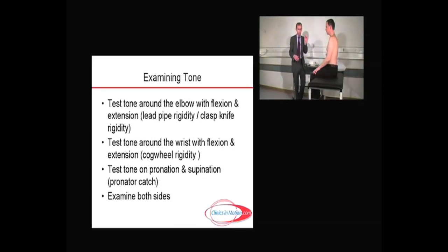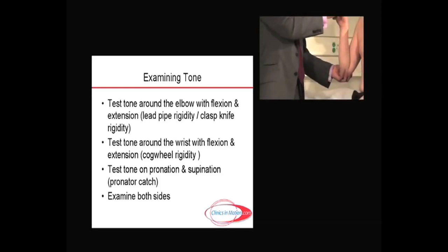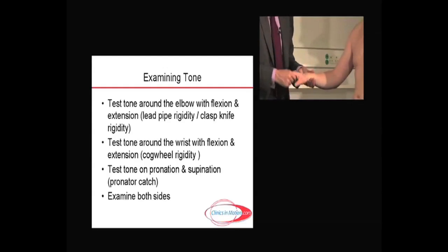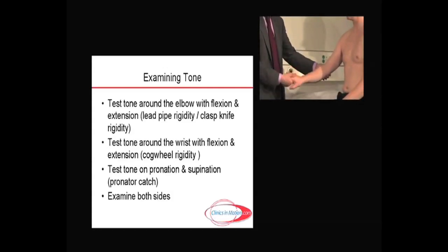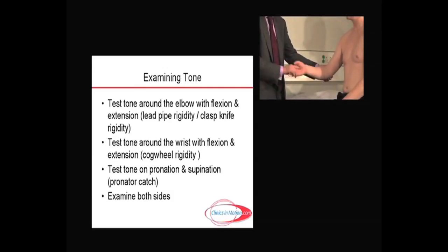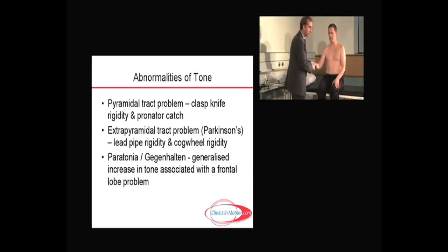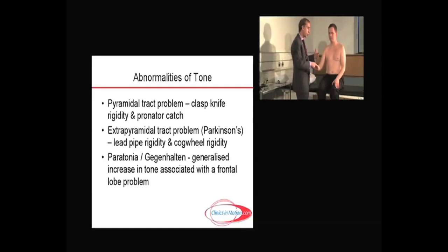People tend to approach tone in a haphazard manner, so I always recommend organisation. I bend the arm up and down at the elbow — flexion and extension — thinking about lead pipe rigidity in Parkinson's. Then I move down and bend at the wrist, thinking of cogwheel rigidity in Parkinsonism or extrapyramidal disorders. Then a more subtle sign: moving from pronation to supination quickly. In upper motor neuron or corticospinal tract damage, you get a catch called a pronator catch. Clasp-knife rigidity is pull-then-release; pronator catch is a pyramidal tract problem. Lead pipe rigidity at the elbow and cogwheel rigidity at the wrist is extrapyramidal or Parkinsonian. If tone is generally and non-specifically increased, think about paratonia or Gegenhalten — a frontal lobe problem where the brain can't connect to relax muscles when instructed.